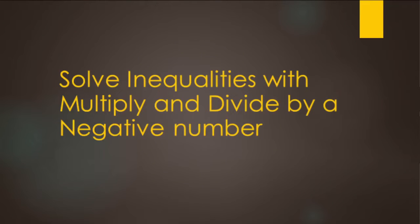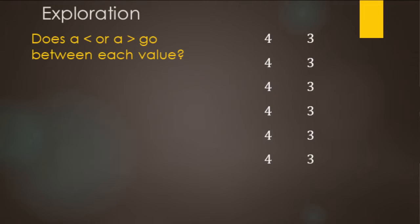In this video, we're going to be looking at solving one-step inequalities with multiplying or dividing by a negative number applied to both sides. We're just going to explore some numbers when we are multiplying by positives and negatives to get an idea of why this happens. We're looking at these two columns here, and we're going to be putting a less than or greater than symbol there.